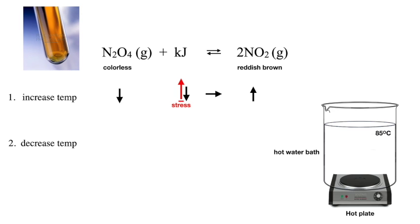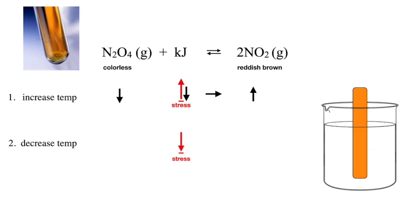It would look like this. I have a hot water bath. I take my equilibrium tube. I drop it in the water. It shifts to the right, to the products, and it gets darker. What if I throw some ice in the water and I decrease the temperature? It will shift to replace what was lost. Colorless goes up. Red-brown goes down. So I lose red-brown and form more colorless.